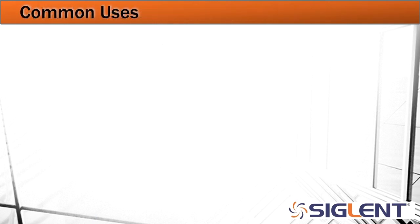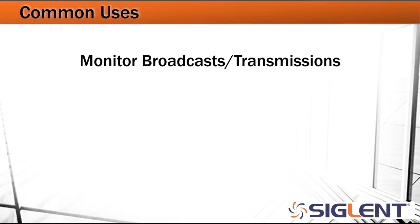Now some common uses for a spectrum analyzer include monitoring broadcasts and transmissions. This would be FM, AM, Wi-Fi, Bluetooth, so anything that we're communicating wirelessly from one place to another. We may want to see what the amplitude is and over what frequency ranges we may be concerned with.